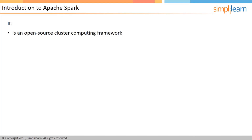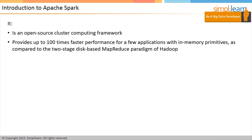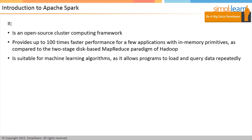Apache Spark is an open source cluster computing framework that was initially developed at UC Berkeley in the Amp Lab. As compared to the disk-based two-stage MapReduce of Hadoop, Spark provides up to 100 times faster performance for a few applications with in-memory primitives. This makes it suitable for machine learning algorithms, as it allows programs to load data into the memory of a cluster and query the data constantly.